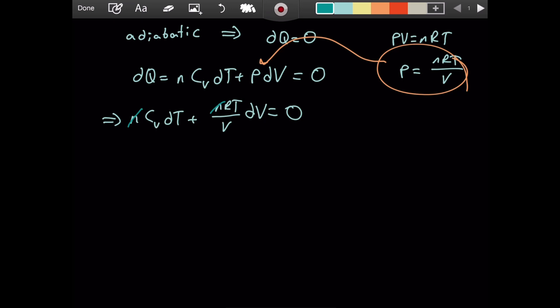If at this point we divide both sides by temperature, we obtain Cv dT by T plus R dV by V equals zero. Now we can take the integral on both sides, and you can distribute the integral sign. Since Cv and R are constants, you can factor them out.